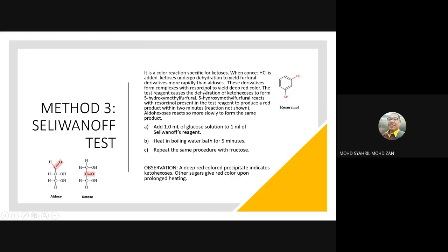Resorcinol combines with the furfural derivative to yield a deep red color. The test reagent causes dehydration of ketose to form 5-hydroxymethylfurfural, which reacts with resorcinol to produce the red color. An example of a ketose is fructose. The test reagent produces red within 2 minutes for ketoses. Aldoses react more slowly to form the same product — the furfural formation is slower for aldoses.